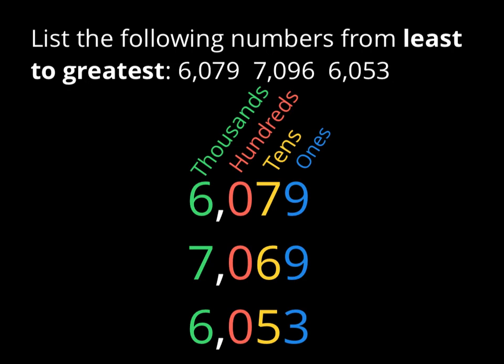Just like before, I'm going to take those three numbers and place them on top of each other, lining them up by their place — making sure that the thousands are all in the same column, the hundreds are in the same column, the tens, the ones, all in the same column. Same three numbers: 6,079; 7,096; 6,053 — just in the order they were presented to you.